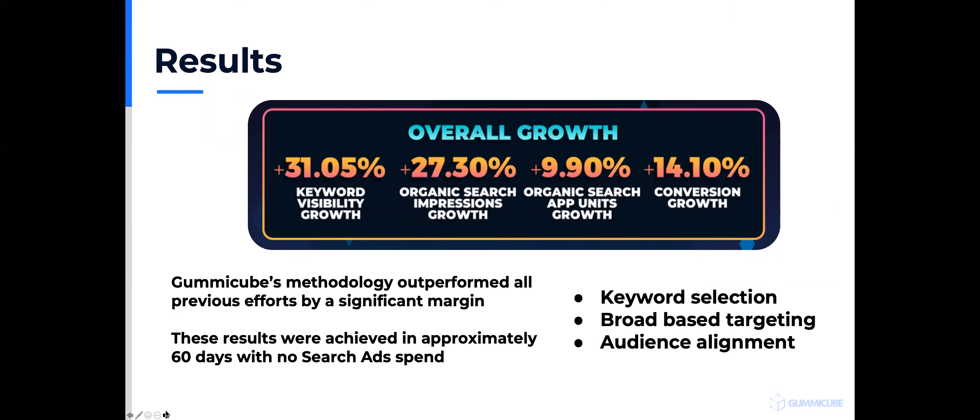This goes against two misconceptions. One, broad-based optimization works — it's not about focusing on one keyword only, it's about getting Apple and Google to merchandise you. Two, paid marketing can support organic success, but organic success is not a pay-to-play model. A lot of people say just run an Apple Search Ads campaign, but if you're not relevant and haven't done your ASO to build that foundation, Apple isn't going to send you volume. You can achieve great results without spending money on paid, and if you do run Apple Search Ads or Google UAC, ASO contributes to better results.